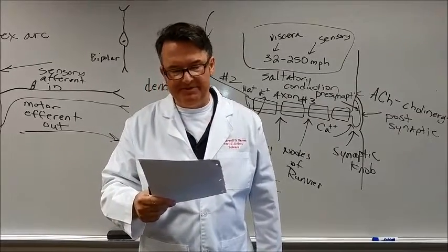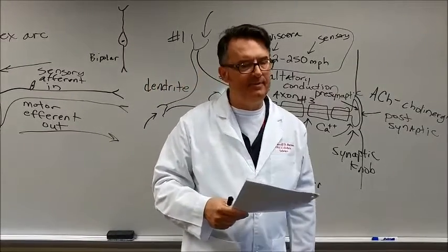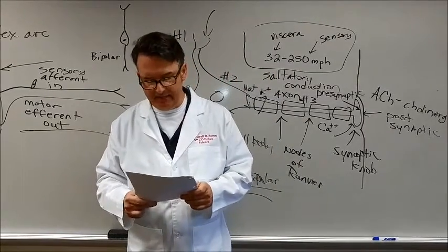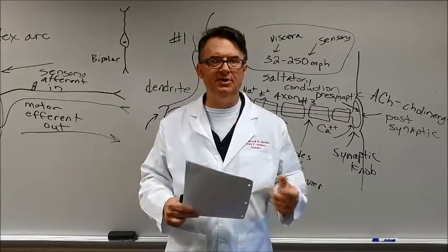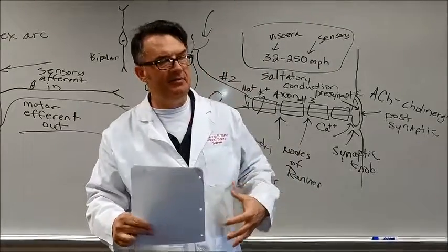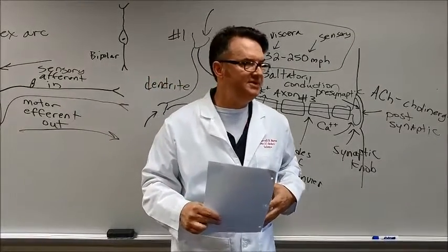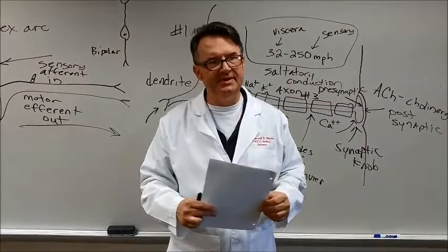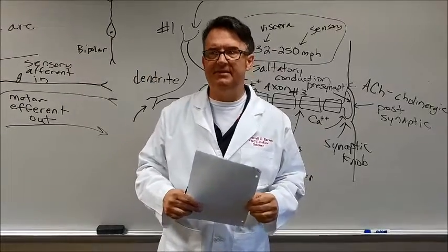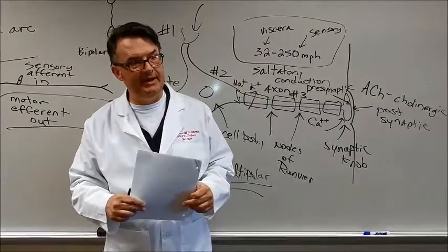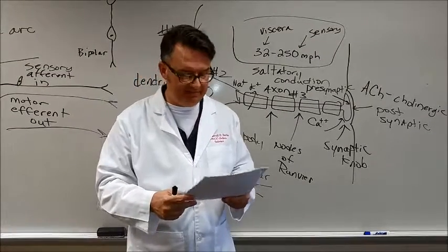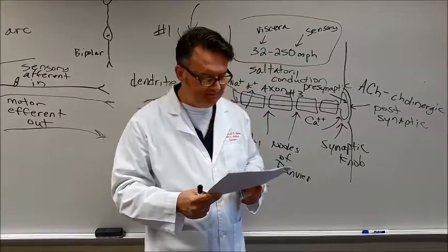There are type A fibers, type B fibers, and type C fibers when we talk about axons. Remember that the type A fibers are myelinated, 250 miles per hour. Type B fibers are also myelinated, 32 miles per hour. These 32 mile per hour ones, from what I understand, are sensory fibers from internal body parts. Usually, the type A fibers are picking up information from the periphery. Type C fibers are 1 to 5 miles per hour, and they're unmyelinated, and these are probably pain fibers, nociceptive fibers.